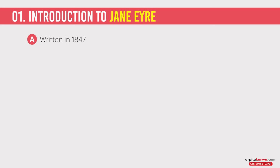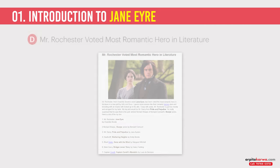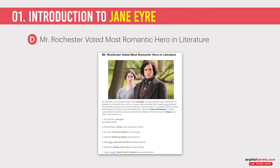The novel is written in the year 1847, set in northern England, and narrated in first-person point of view. A very interesting fact is that Mr. Rochester, who is the male protagonist of the novel, is considered the most romantic character in literature. A poll was taken in the year 2009 by Mills and Boon, a romance publisher, where it was found that Mr. Rochester received even more votes than Mr. Darcy from Pride and Prejudice, Heathcliff from Wuthering Heights, and Rhett Butler from Gone with the Wind. So Mr. Rochester's character is very interesting and I am going to introduce you to this character very soon.